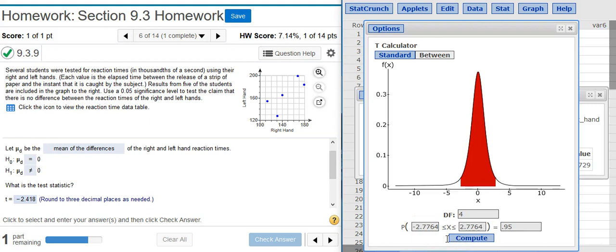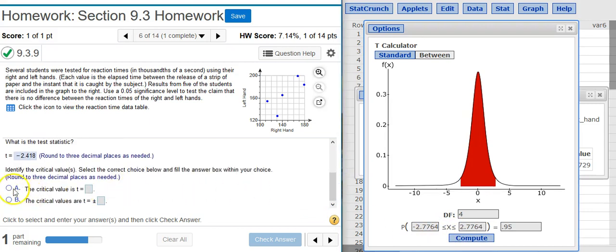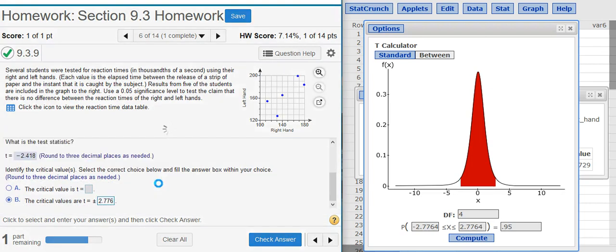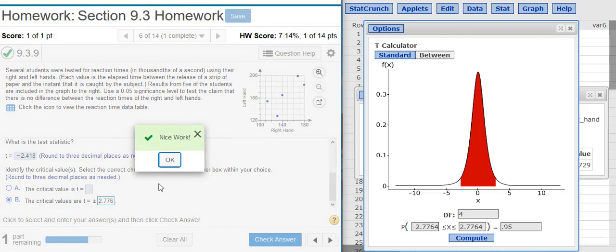Now, you just press compute, and here are my critical values, which I can now put here in my answer field. And it wants three decimal places. Nice work!